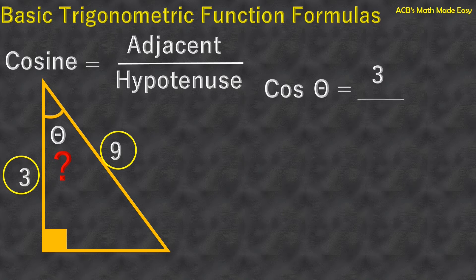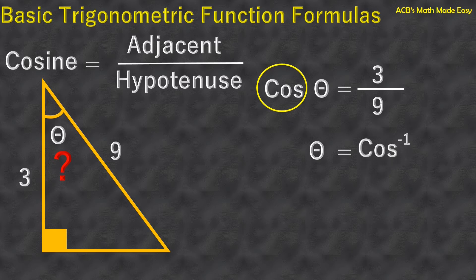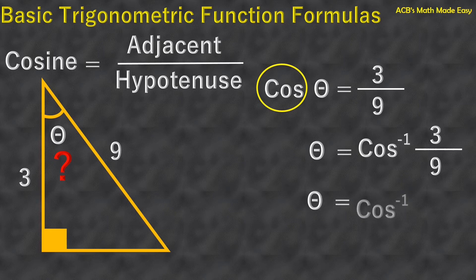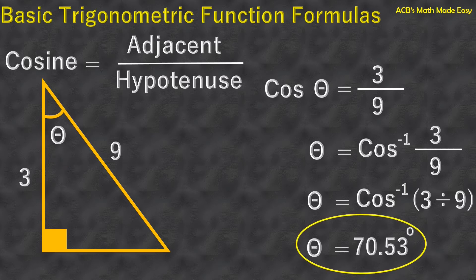Cosine theta equals 3 over 9. Next step is to know the inverse function of cosine so we can get the value of angle theta. Theta equals — what is the inverse of cosine? Yes, arc cosine. And this is its symbol. So theta equals arc cosine 3 over 9, which means theta equals arc cosine 3 divided by 9. So angle theta equals 70.53 degrees.